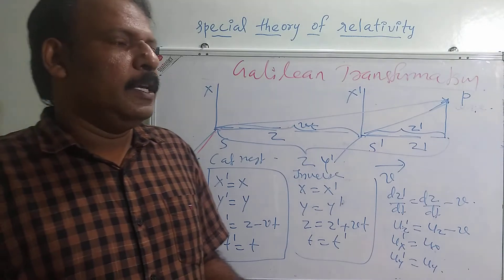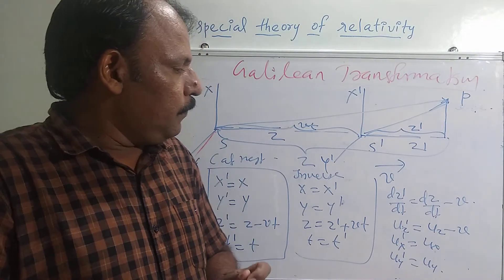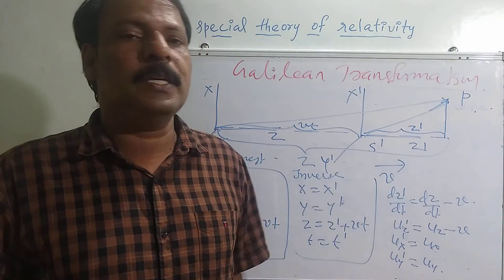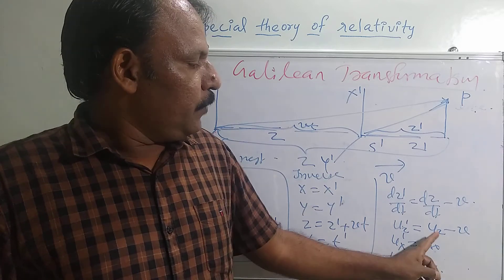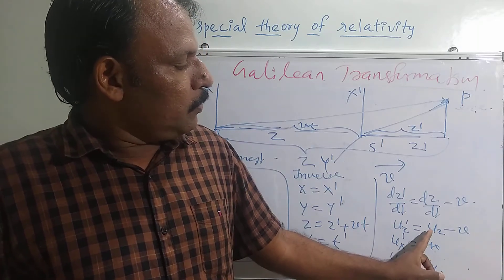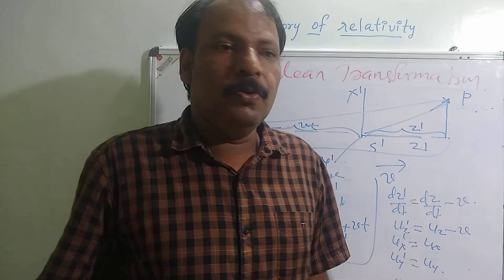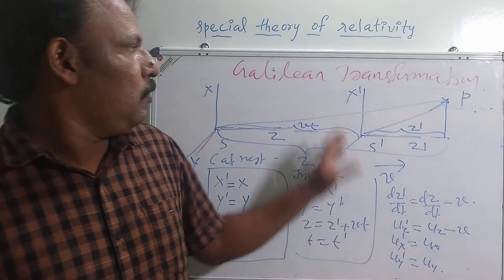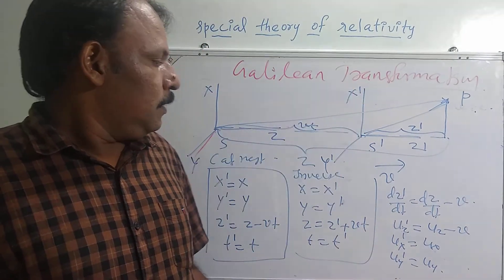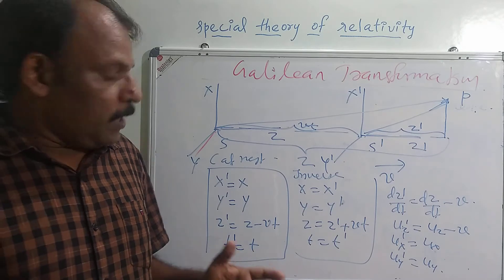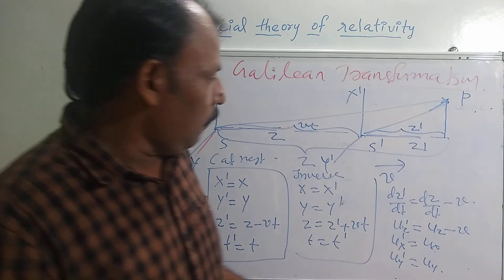We know that in Newtonian mechanics, if two particles are moving along the same direction, the relative velocity will be UZ minus UB. So Newtonian mechanics is obeyed in Galilean transformation.